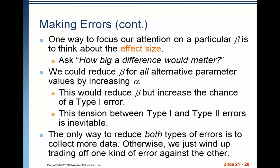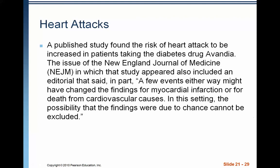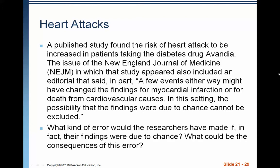Let's look at an actual example. A published study found the risk of heart attack to be increased in patients taking the diabetes drug Avandia. The issue of the New England Journal of Medicine in which that study appeared also included an editorial saying, in part, 'a few events either way might have changed the findings for myocardial infarction or for death from cardiovascular causes. In this setting, the possibility that the findings were due to chance cannot be excluded.' What kind of error would the researchers have made if their findings were due to chance? And what could be the consequences?